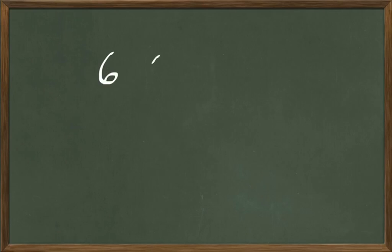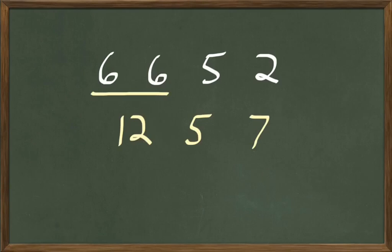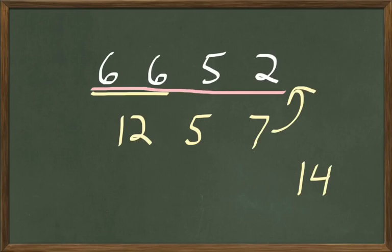Let's just do a couple more. The next one is 6 and 6 less 5 multiplied by 2. How many are 6 and 6? 12. Then we subtract 5: 12 less 5 are 7. How many are 7 multiplied 2 times? 2 times 7 are 14. So 6 and 6 less 5 multiplied by 2 are 14.